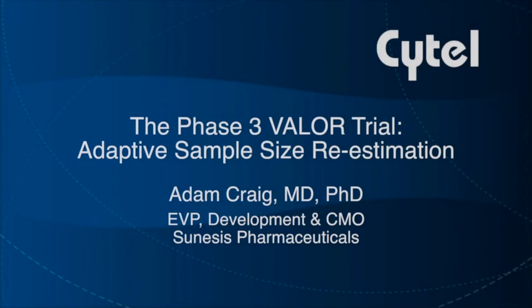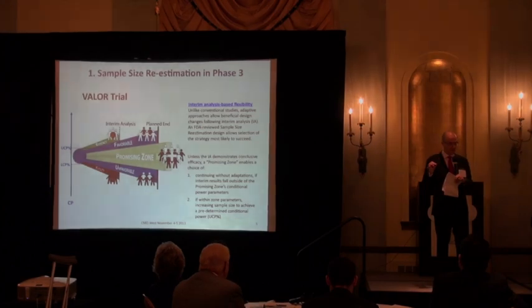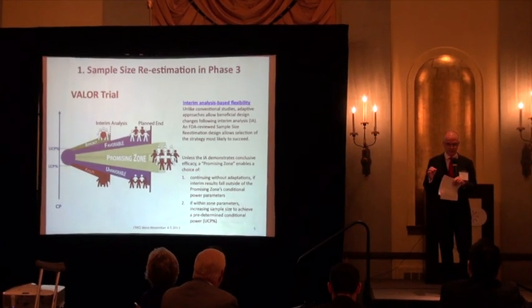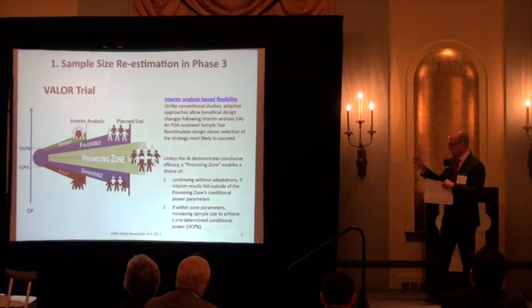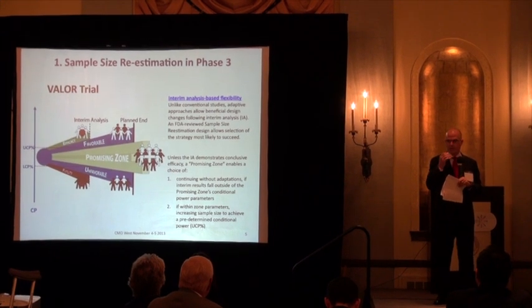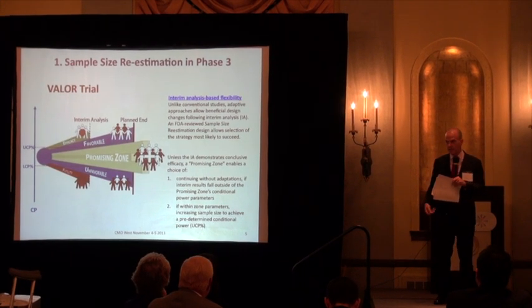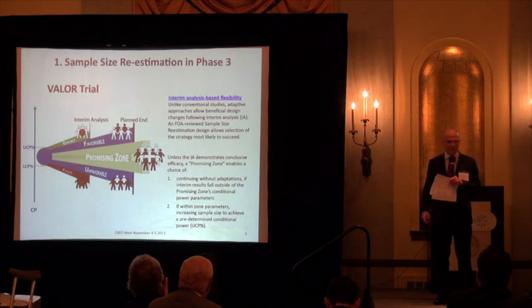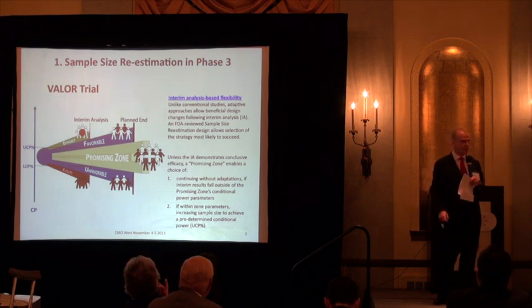Let me take you back to 2010. What I'm about to tell you I take no credit for, because it was done by my predecessor. But from what I saw, that's why I joined the company two years ago — Sinesis. So in 2010, Sinesis had about 150 to 200 patients' worth of data in acute leukemia, mainly relapsed refractory leukemia.